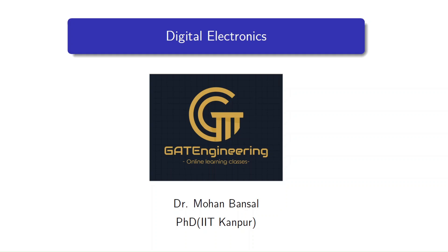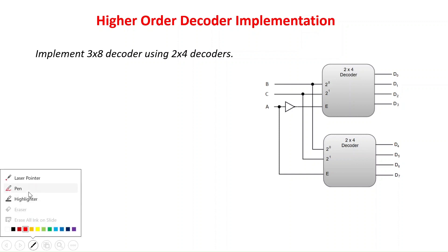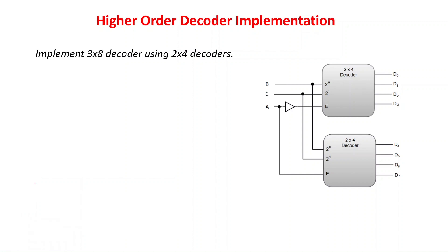Hello everyone, welcome back to the Gate Engineering Online Learning Classes. In this video, we are going to learn about implementation of higher order decoders with the help of lower order decoders. This means implementation of a 3x8 decoder with the help of a 2x4 decoder, a 4x16 decoder with the help of a 2x4 decoder, and also the largest decoder implementation. The discussion about the decoder is already done in another video; that link is given in the description.